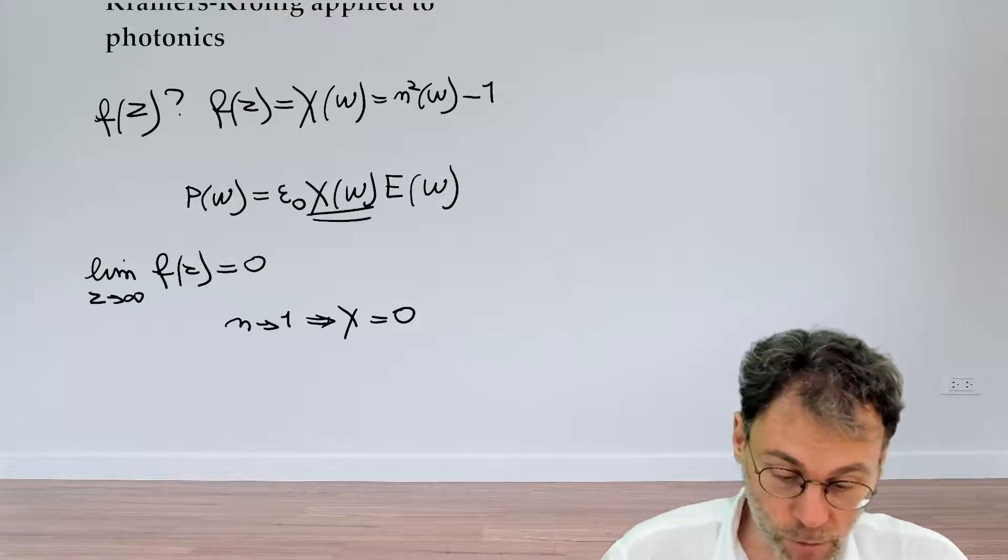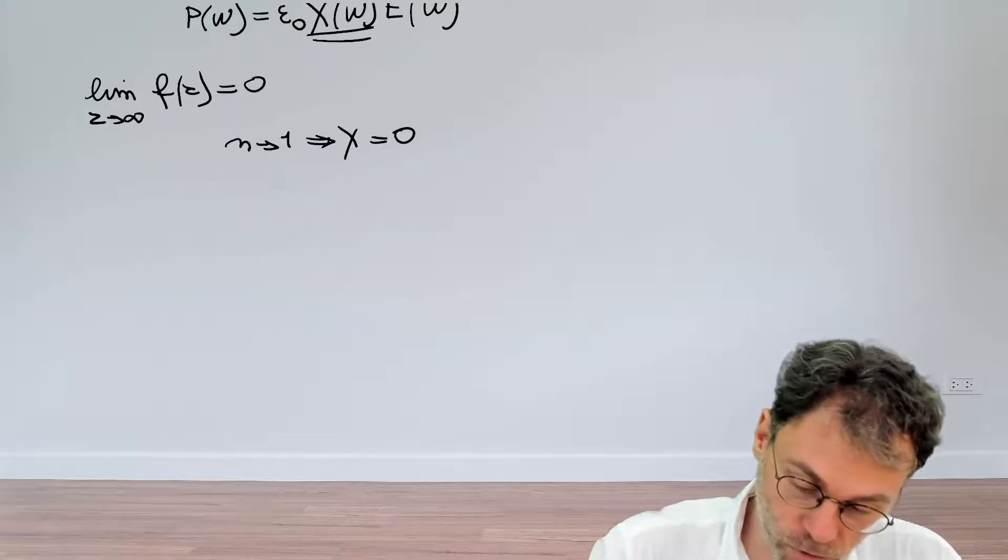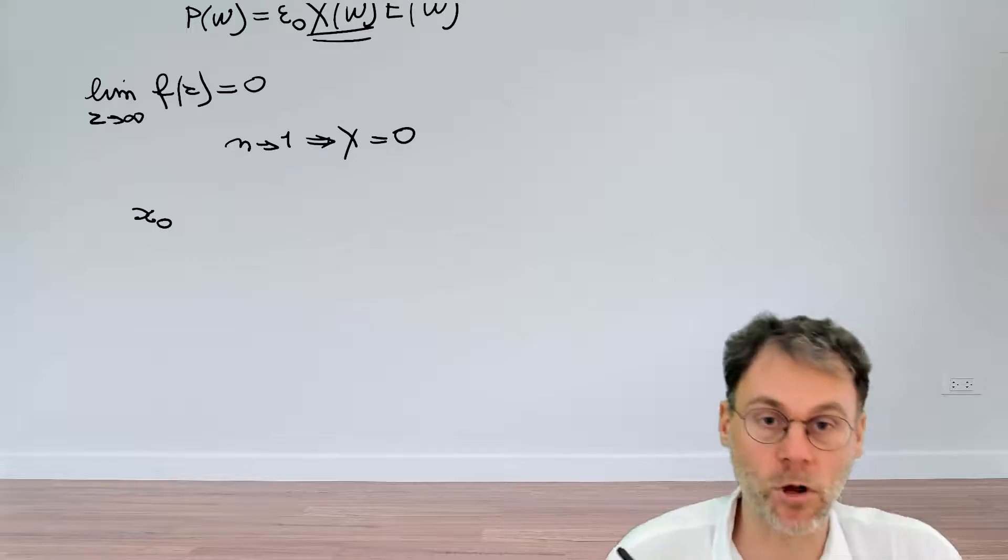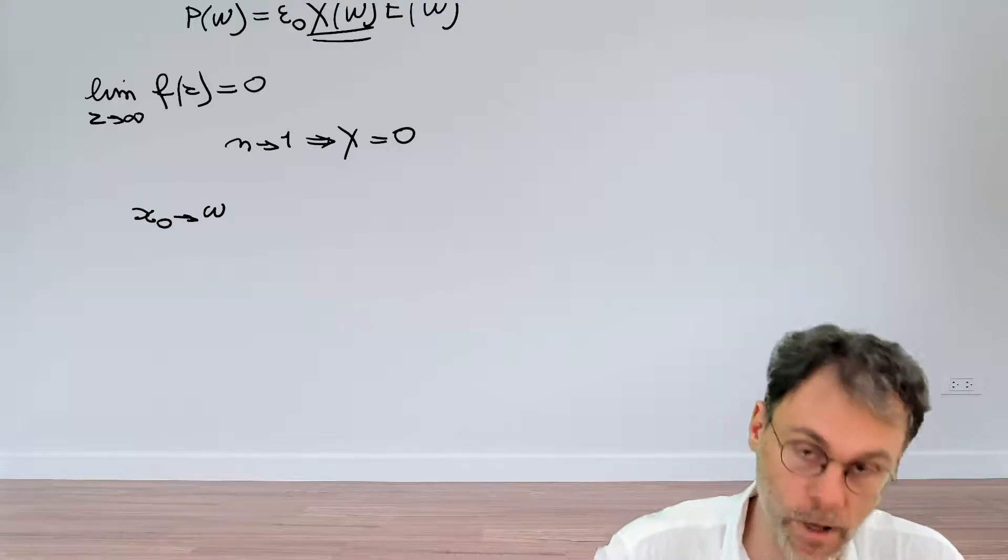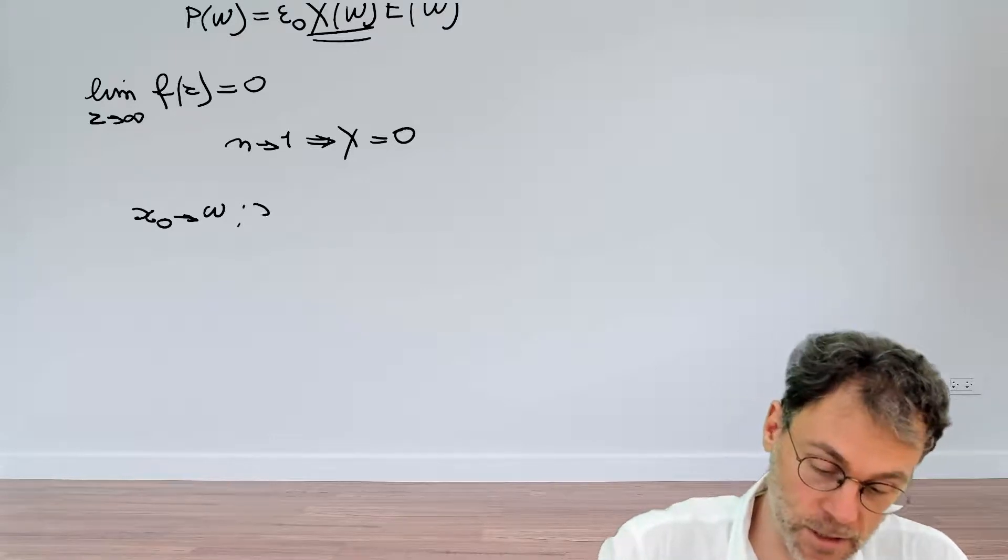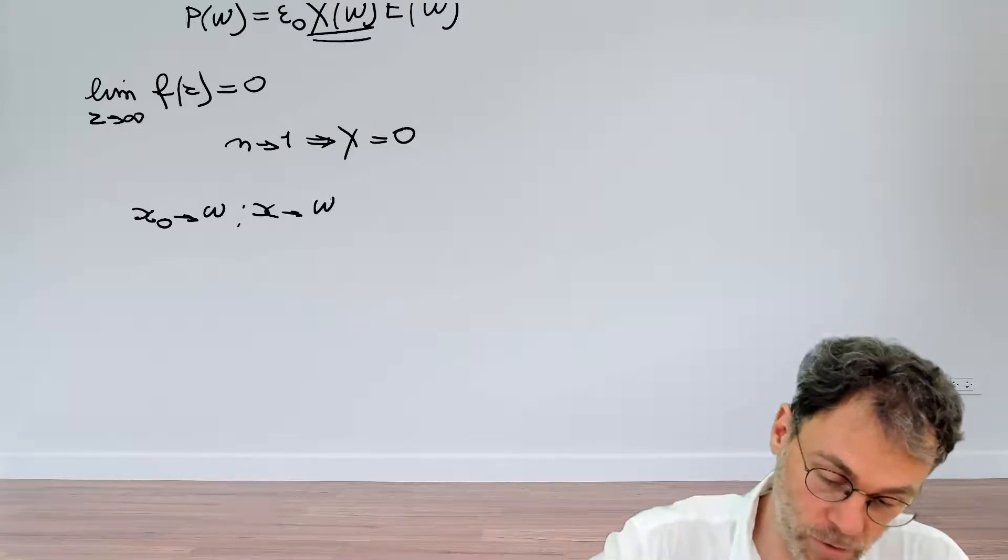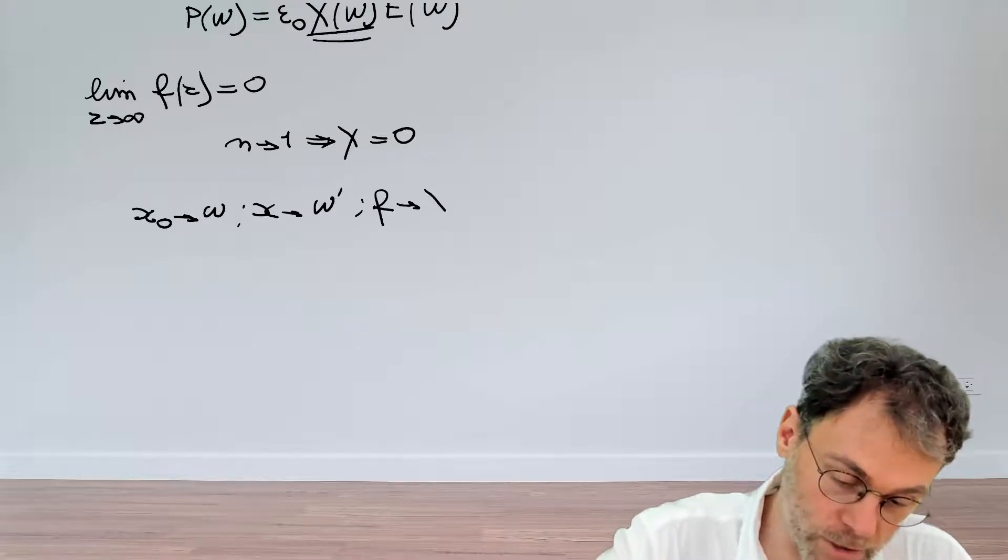So now the only thing we're going to do is just some small notational changes. There's an x_0 in the Kramers-Kronig dispersion relationships we're going to replace that by omega, the frequency that we're interested in, and then the integration variable x we're going to call that omega prime.